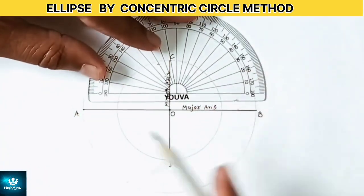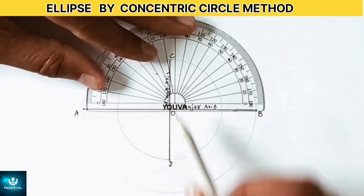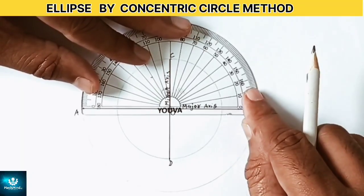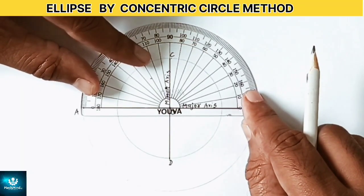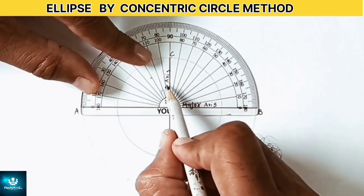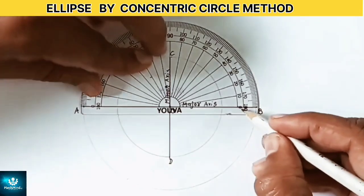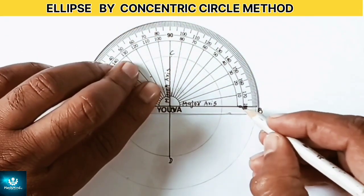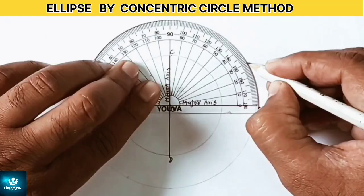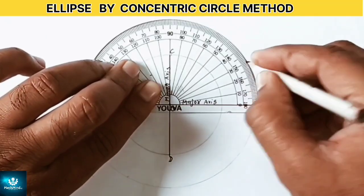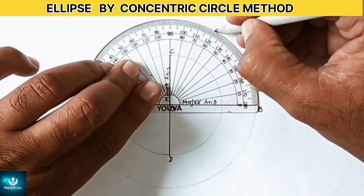Now place the protractor at the center O. Divide the outer circle, that is the circle with diameter AB, into 12 equal parts of 30 degrees each. Mark these points carefully.